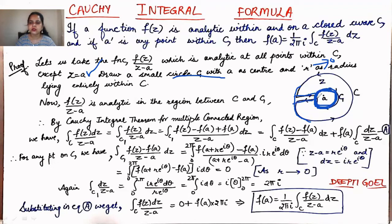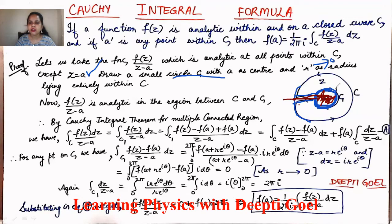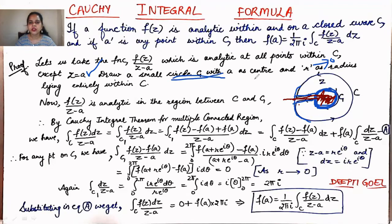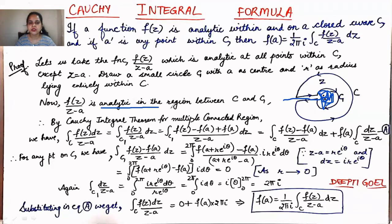This multi-connected region can be converted into a simply connected region by introducing a cut. The red portion is excluded when we open up the curve, and then the region is analytic at all points within C1 and C. So when we introduce circle C1 with center 'a' and radius r lying entirely inside C, and introduce the cut, we convert the multi-connected region into a simply connected region, excluding the portion where the function was not analytic. Thus f(z)/(z − a) is analytic in the region between C and C1.